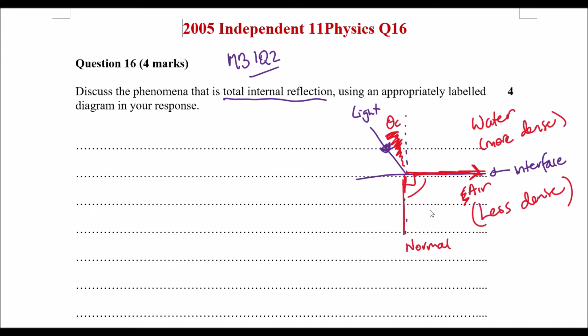So angle of refraction is equal to 90 degrees, and then after that we can get a phenomenon called total internal reflection.